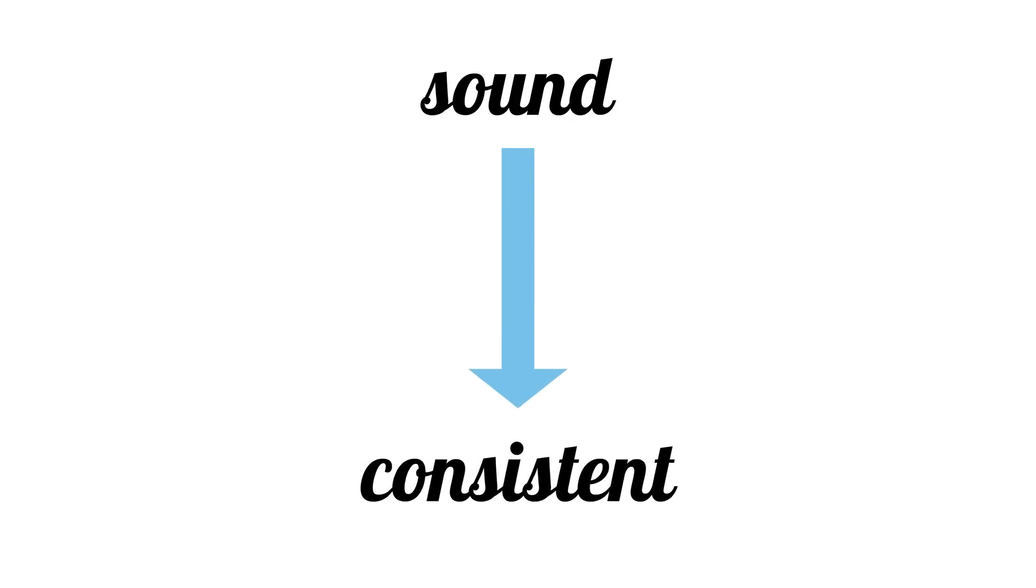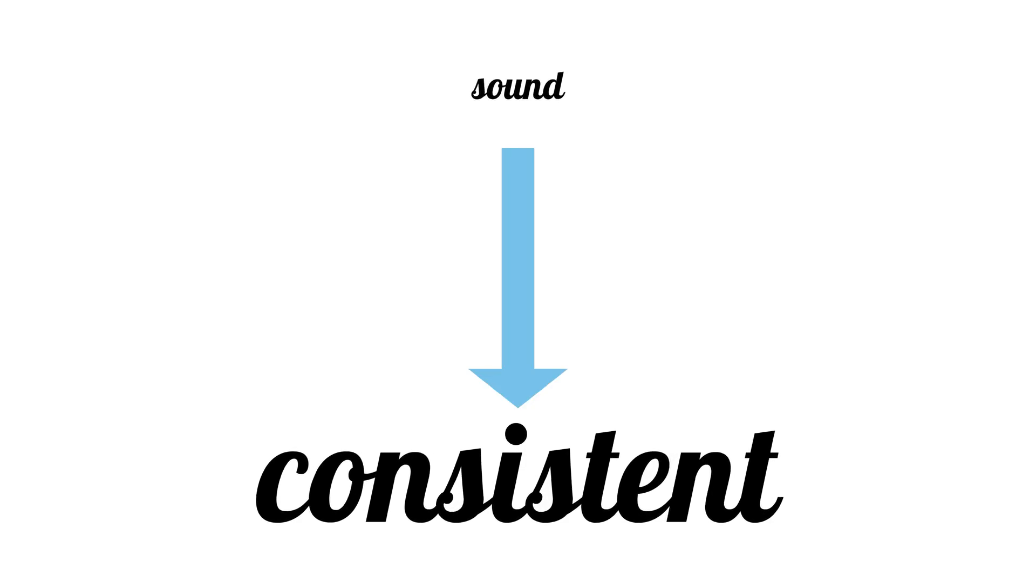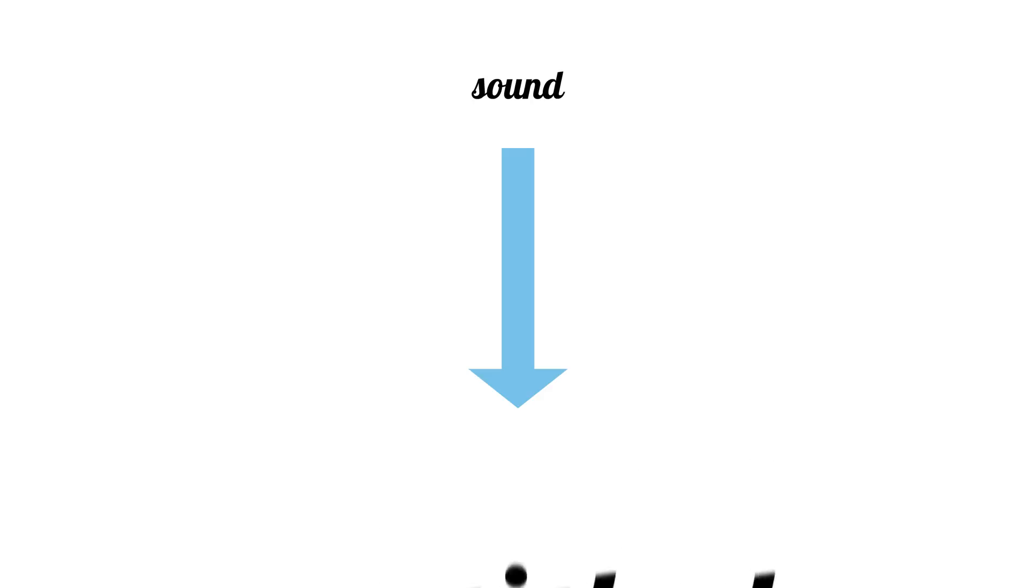If a system is sound, then it's also consistent, so soundness is slightly weaker than consistency, but the proof should be a little easier to work through. We'll come back to consistency in a future video, but because of its simplicity, I want to focus on soundness for this one.